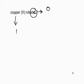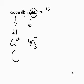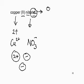Copper is a metal, so it's definitely positive. Because it's copper(II), it's 2+. Nitrate is NO₃ with a minus charge. So we have a 2+ ion and a minus ion. We'll need to take another minus ion to make it balance — so we take copper times 1 and nitrate times 2.